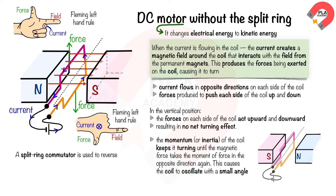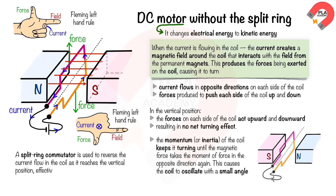The split ring commutator reverses the current flow in the coil as it reaches the vertical position, effectively changing the direction of the magnetic forces and pushing the coil to continue rotating.